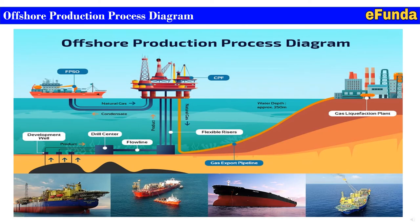Moving on to the offshore production process diagram — one can see the FPSO central processing facility, gas liquefaction plant, development well, drill center, flow line connection to the valve line connected to the flow risers, which go to the central processing facilities. From there, natural gas coming from the FPSO enters the central processing facility, condensate returns to the FPSO, and further the natural gas is exported through gas import pipelines to the gas liquefaction plant. This is how the complete offshore production process shows how facilities are connected to process crude oil, crude gas or natural gas from the seabed.